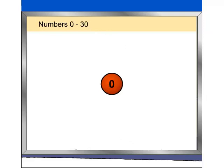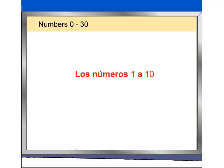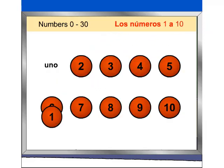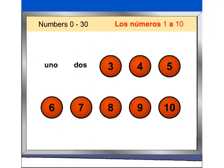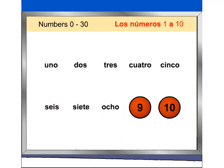The Spanish word for 0 is cero. The Spanish words for numbers 1 through 10 are: uno, dos, tres, cuatro, cinco, seis, siete, ocho, nueve, diez.